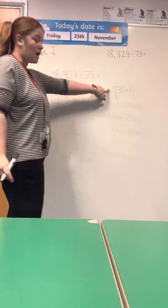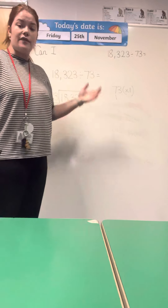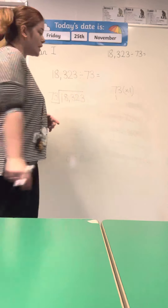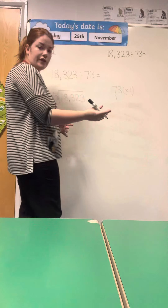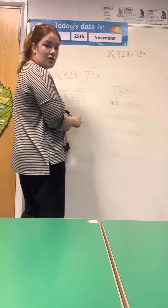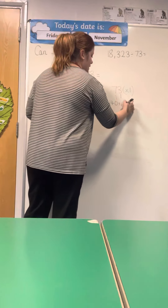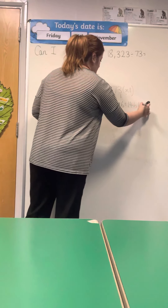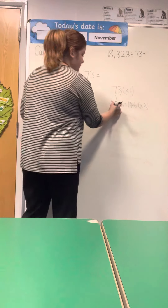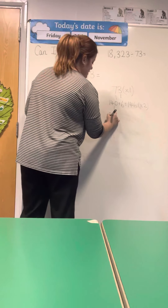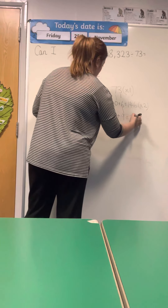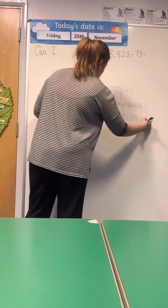My tens are going up in 70s. If I don't know my 70 times table, I can do my 7s and make it 10 times greater: 7, 14 — 14 times 10 is 140. My ones go up in 3s: 3, 6. So 73 times 2 is 146. Next: 7, 14, 21 — 10 times greater is 210 — and 3, 6, 9. So my next multiple of 73 is 219.